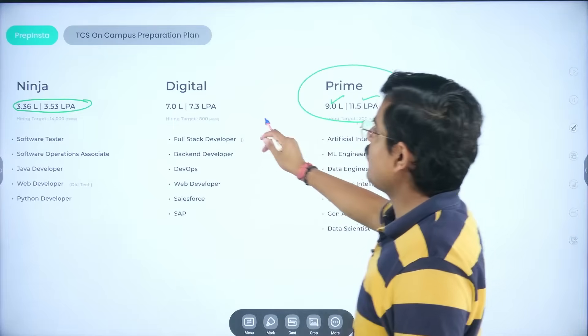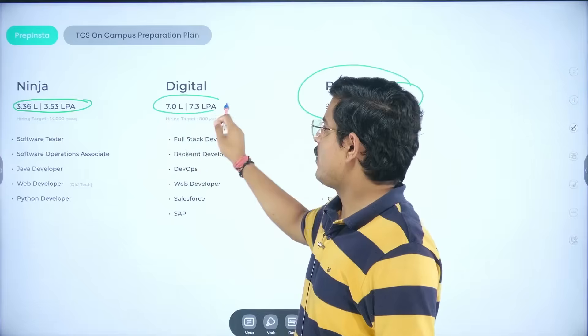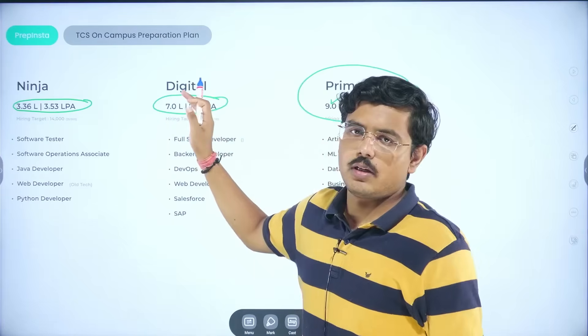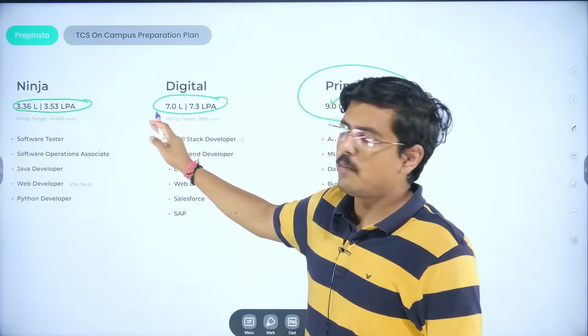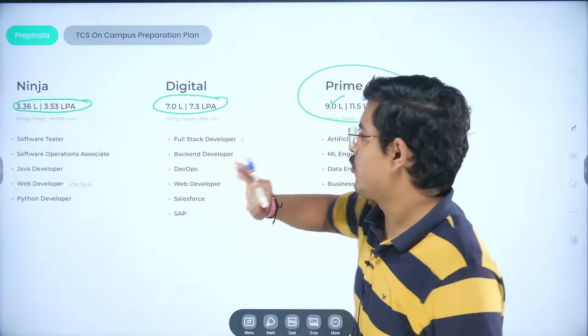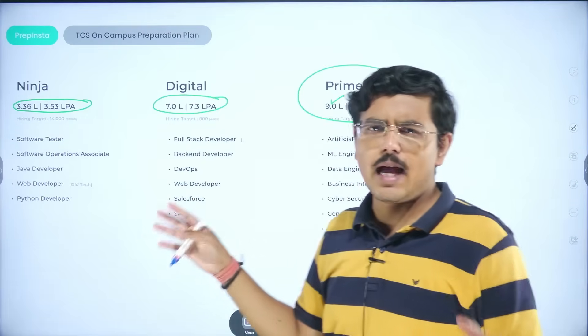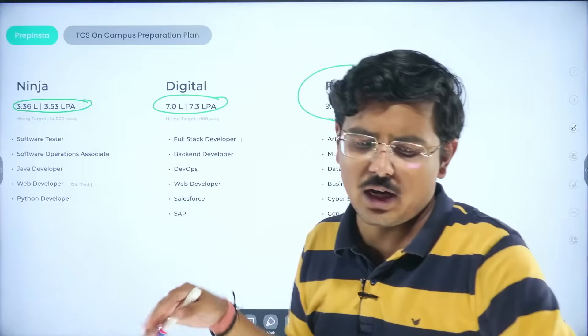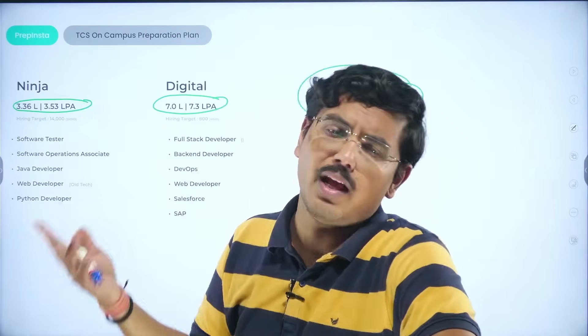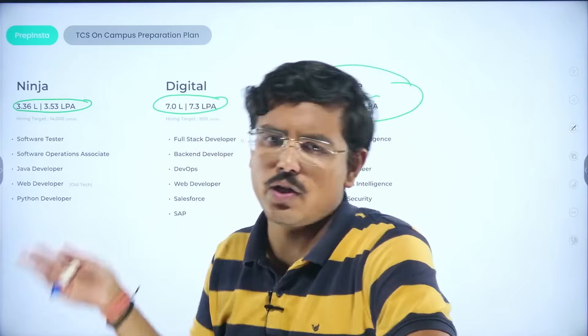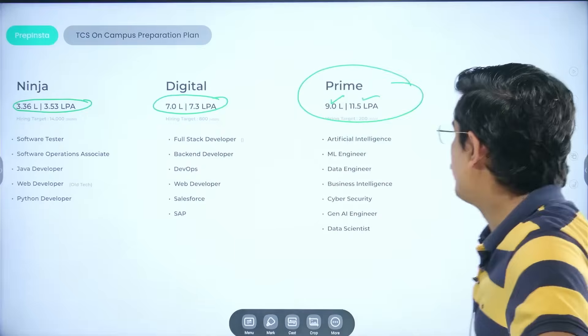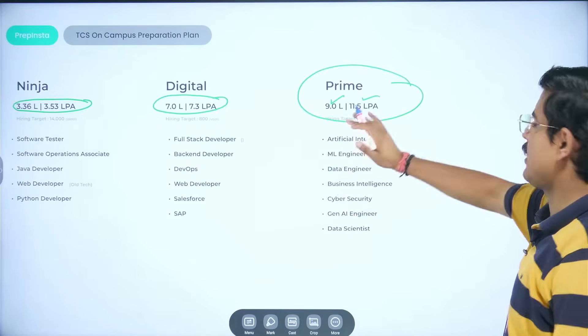In digital, you had 7 LPA and 7.3 LPA. Again, the post-graduate and graduate difference. So graduate would be earning 7 LPA, post-graduate would be earning 7.3 LPA. Full-stack developer, backend developer, DevOps, Salesforce, SAP, intermediate domains which are relevant in industry now and down the line five years. Some of them might vanish, some of them still would remain. So these are three primary profiles that TCS offers you.